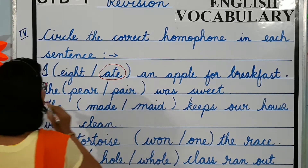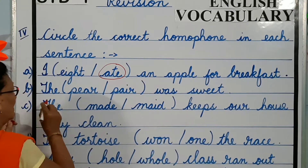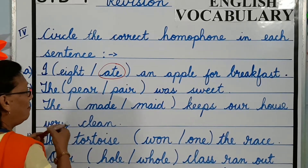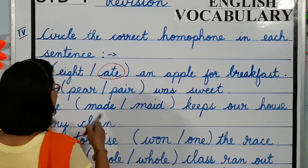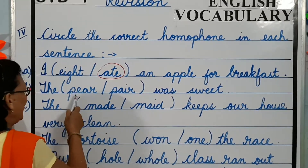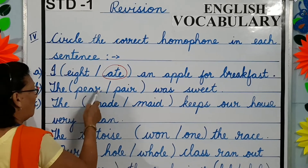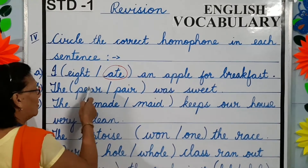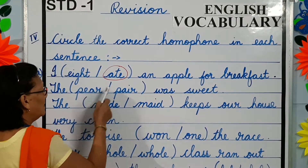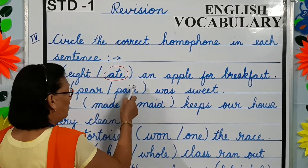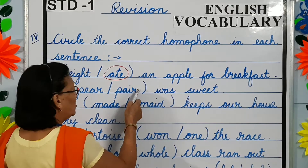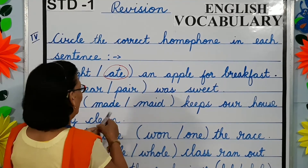B. The pear was sweet. P-E-A-R: pear, a fruit. P-A-I-R: pair, two things together. The pear was sweet.